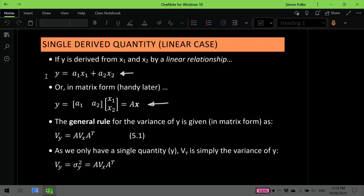Now if we are able to express our derived quantity y in such a way, then the rule for propagation of variances states that the variance-covariance matrix of the derived quantity y, that's over here on the left, can be formed from the variance-covariance matrix of the measurements, that's in here, via this formula. This is the general rule for the propagation of variances, 5.1.